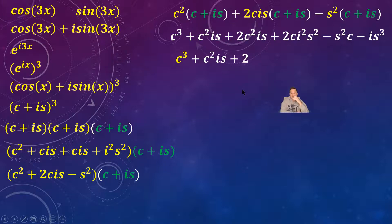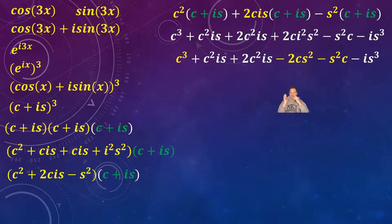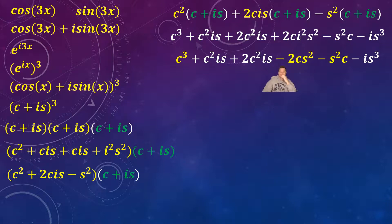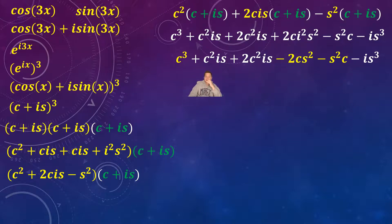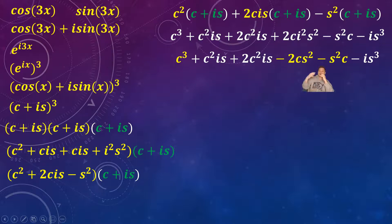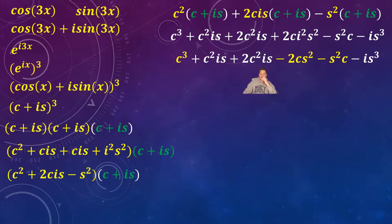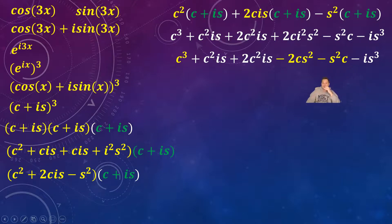So it's going to look like: c cubed plus c squared·i·s plus 2c squared·i·s minus 2c·s squared minus s squared·c minus i·s cubed. I've replaced i squared with negative one, and I've color-coded the like terms: c cubed, negative 2c·s squared, and negative s squared·c are like terms; c squared·i·s, 2c squared·i·s, and negative i·s cubed are like terms.